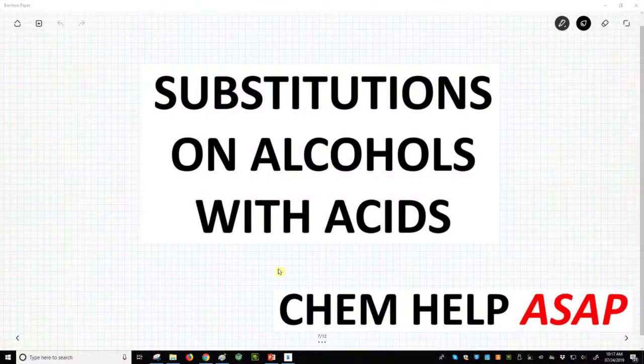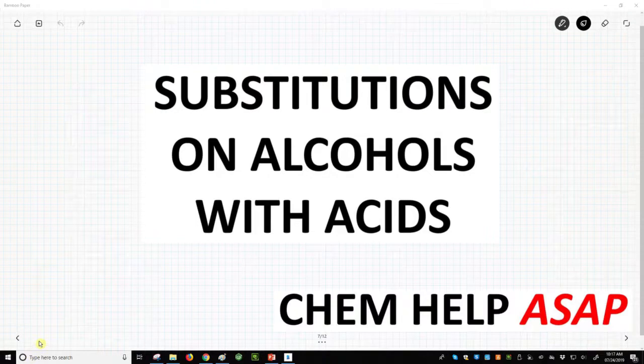Hello from Chem Help ASAP. We are going to discuss how to convert alcohols into leaving groups. Specifically, we're going to convert alcohols into halides. Then we're going to perform this substitution reaction with reagents like HBr and HCl.